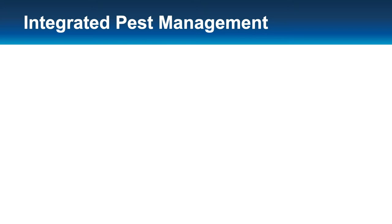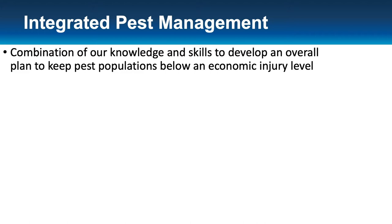What is Integrated Pest Management? You probably hear it all the time and know what it is, but I like to cover the basics before we get into detail. Integrated Pest Management is basically that combination of our knowledge and skills that develops the overall plan to keep pest populations below economic injury level. That economic injury level is more used for insects — it's where they reach a certain number of insects per plant where you start losing money, losing yield. It still applies for weeds and diseases as well. You basically want to avoid that economic loss.